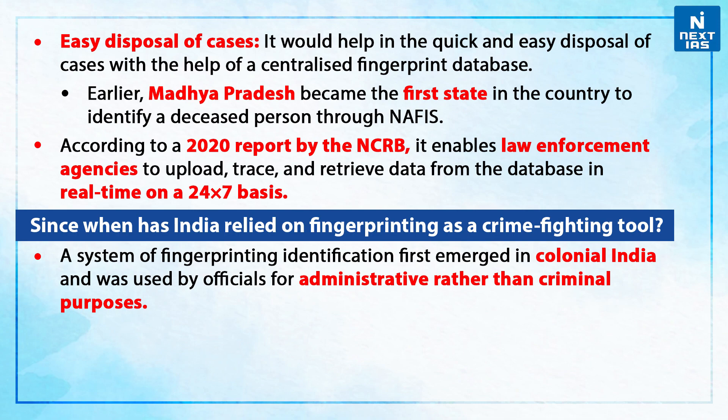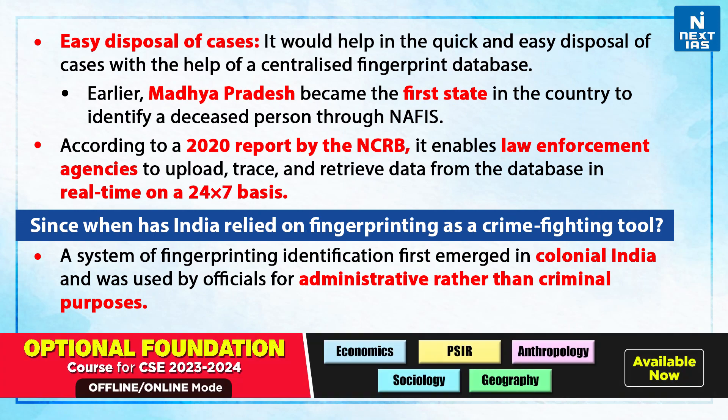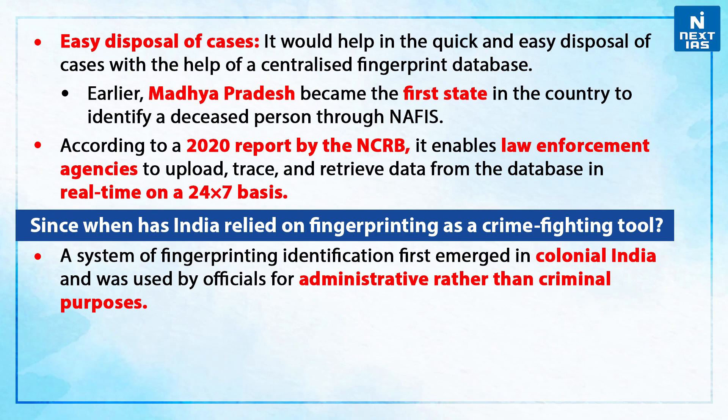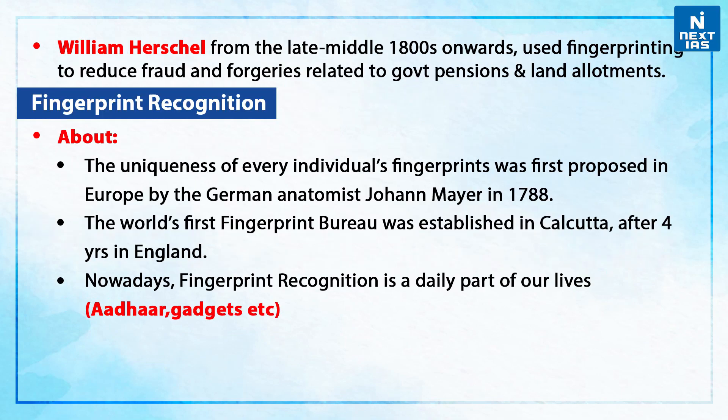A question arises: since when has India relied on fingerprinting as a crime-fighting tool? A system of fingerprint identification first emerged in colonial India and was used by officials for administrative purposes. William Herschel, from the late mid-1800s, used fingerprinting to reduce fraud and forgeries related to government pensions and land allotments.